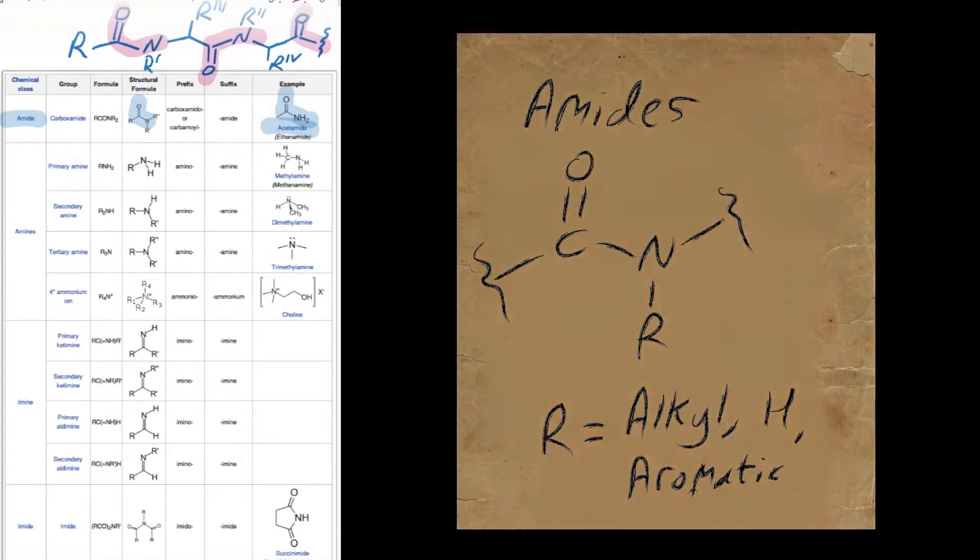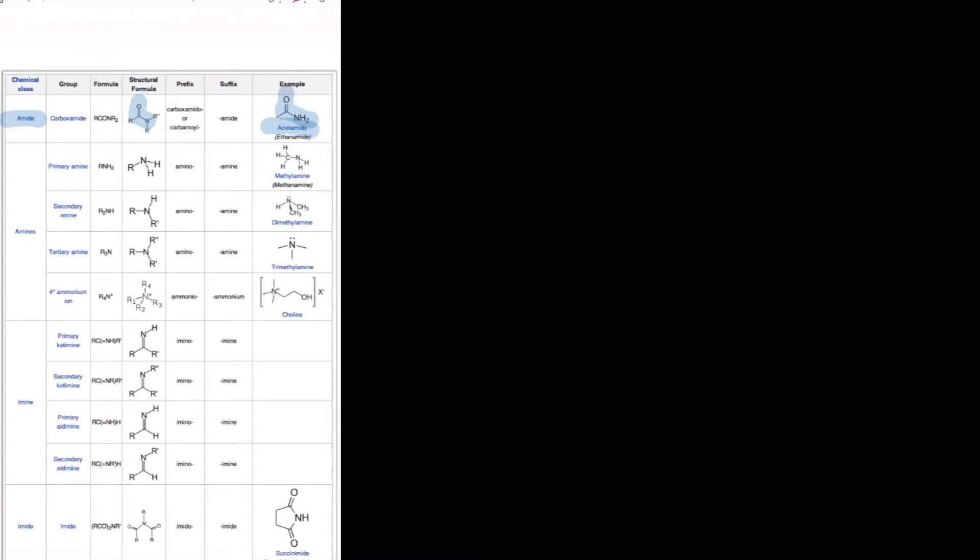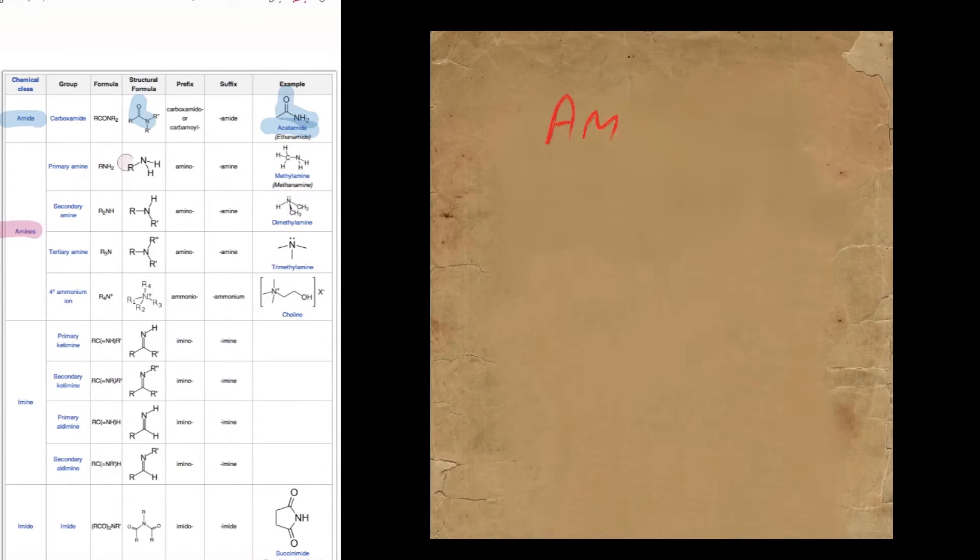Okay, so moving on now to the amines. The amines are denoted by nitrogen—simply that—just a nitrogen that's either connected to hydrogen or it can be an alkyl group, even an aromatic group. It's some hydrocarbon it's connected to.